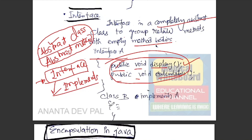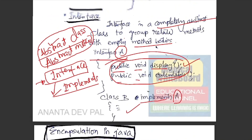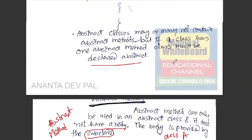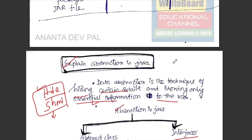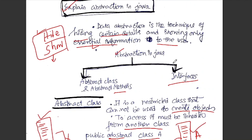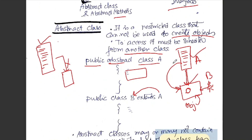Class B implements A. That is the concept of interface. Now, what do we know about the abstract class? It has a technique of hiding some details and showing only essential information. The abstract class has full hiding and is restricted.